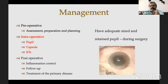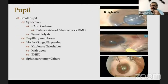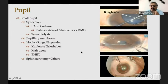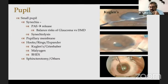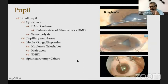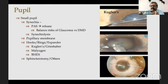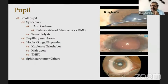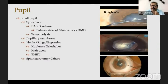Intraoperatively, the most important things are pupil size and the capsule. Have an adequately sized and retained pupil during surgery. Options include Kuglen hooks for moderate-sized pupils, sphincter tears, Grieshaber bars, or a Bhex ring — which provides good pupil retention with easy insertion and removal and no anterior chamber shallowing. For the capsule: uveitic capsules are soft, friable, and easily run. Stain it whenever required. Make a large-size capsular rhexis, as phimosis chances are higher in uveitic cases.